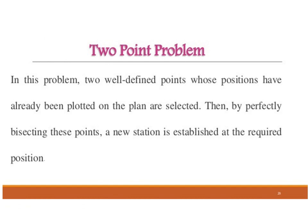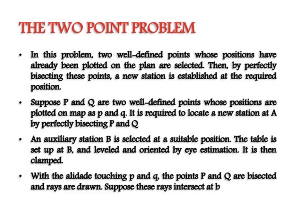In the two-point problem, two well-defined points whose positions have been plotted on the plan are selected, and by perfectly bisecting these points a new station is established at the required position. Suppose P and Q are the two well-defined points plotted on the map as small p and small q. It is required to locate a new station at A by perfectly bisecting capital P and Q.